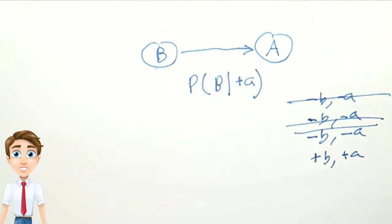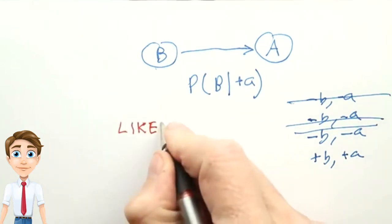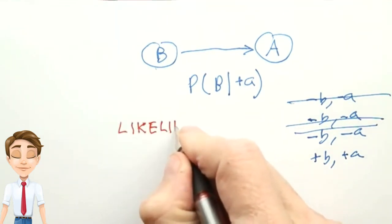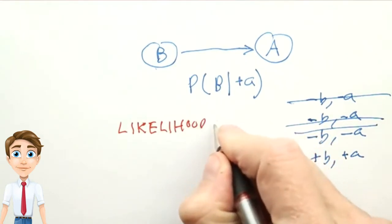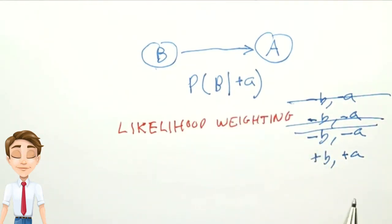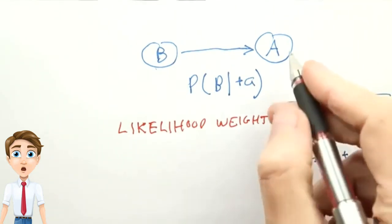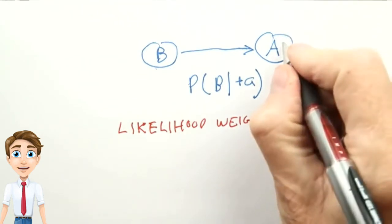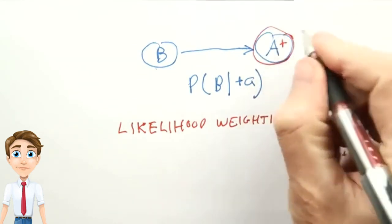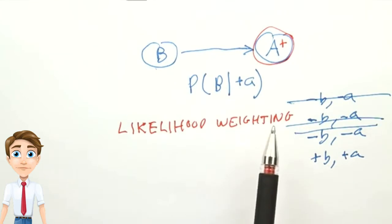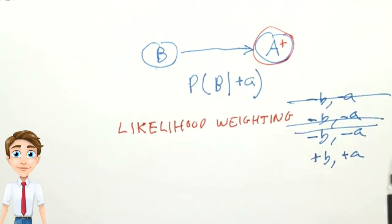So we're going to introduce a new method called likelihood weighting that generates samples so that we can keep every one. With likelihood weighting, we fix the evidence variables, that is, we say that A will always be positive, and then we sample the rest of the variables. So then, we get samples that we want.